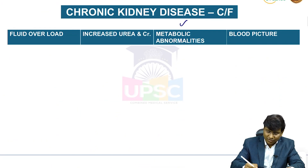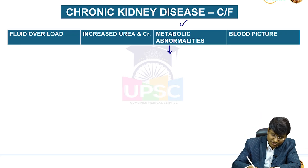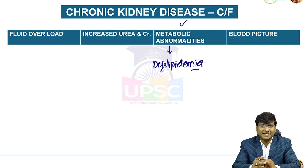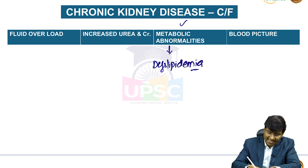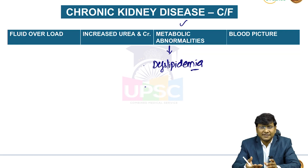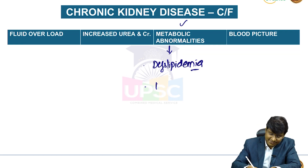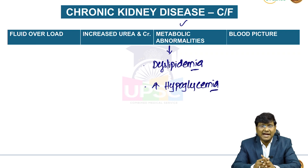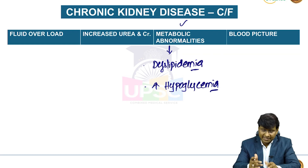Metabolic abnormalities include dyslipidemia, because in patients with chronic renal failure there is decrease in lipoprotein lipase activity, impairing lipid metabolism. If diabetic patients are on insulin, there is a high chance of hypoglycemia because insulin has to be excreted through the kidney. When there is renal failure, insulin is not excreted out, causing more insulin action and hypoglycemia.